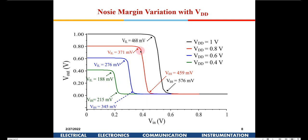As we move from 180nm to 90nm to 45nm and below, VDD decreases. This is constant electric field scaling — we must keep electric fields within manageable levels inside the device. Hence noise margin decreases as technology scales down.